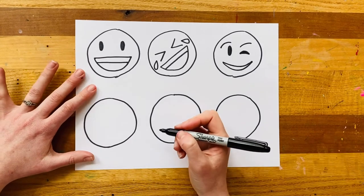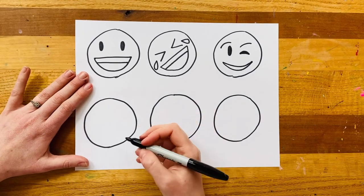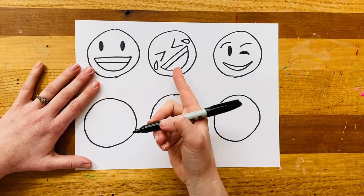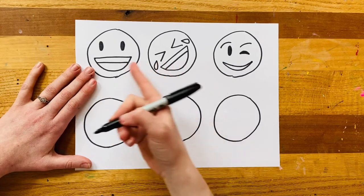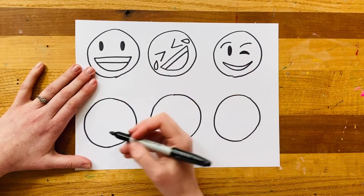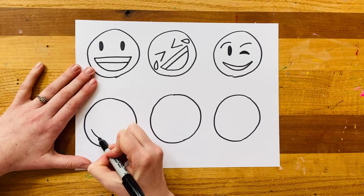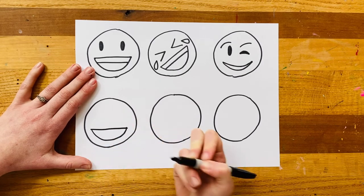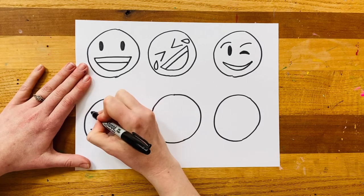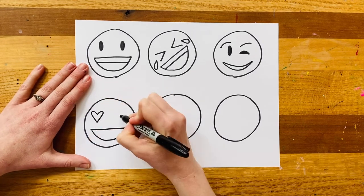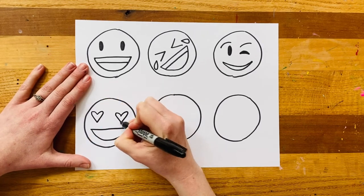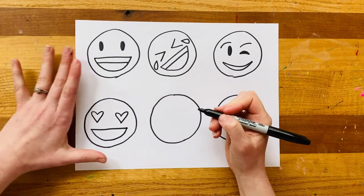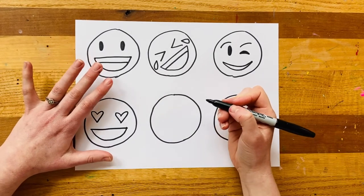Next we're going to make the heart eyes emoji, and the heart eyes emoji is so similar to these two in regards to the mouth, but we just change the eyes. So we'll have a rainbow line for the bottom of the mouth and a straight line across, and then simply a heart for one eye and a heart for the other, and that one's done.